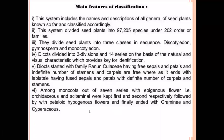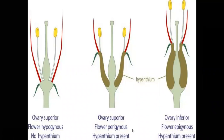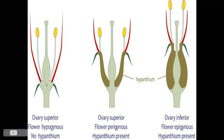Bentham and Hooker's classification is based on three flower positions. In flowering plants, flowers are of three types: hypogynous, perigynous, and epigynous. Hypogynous flowers show a superior ovary, meaning the ovary is present at a superior position relative to the other flower parts.